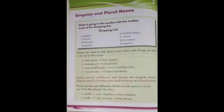First, I have studied singular and plural nouns. Nisha is going to the market with her mother. Look at her shopping list. What is in the shopping list? There are 4 apples, 2 toothbrushes, 2 knives, 6 onions, 8 bananas, 12 tomatoes, 6 pencils and 10 spoons.